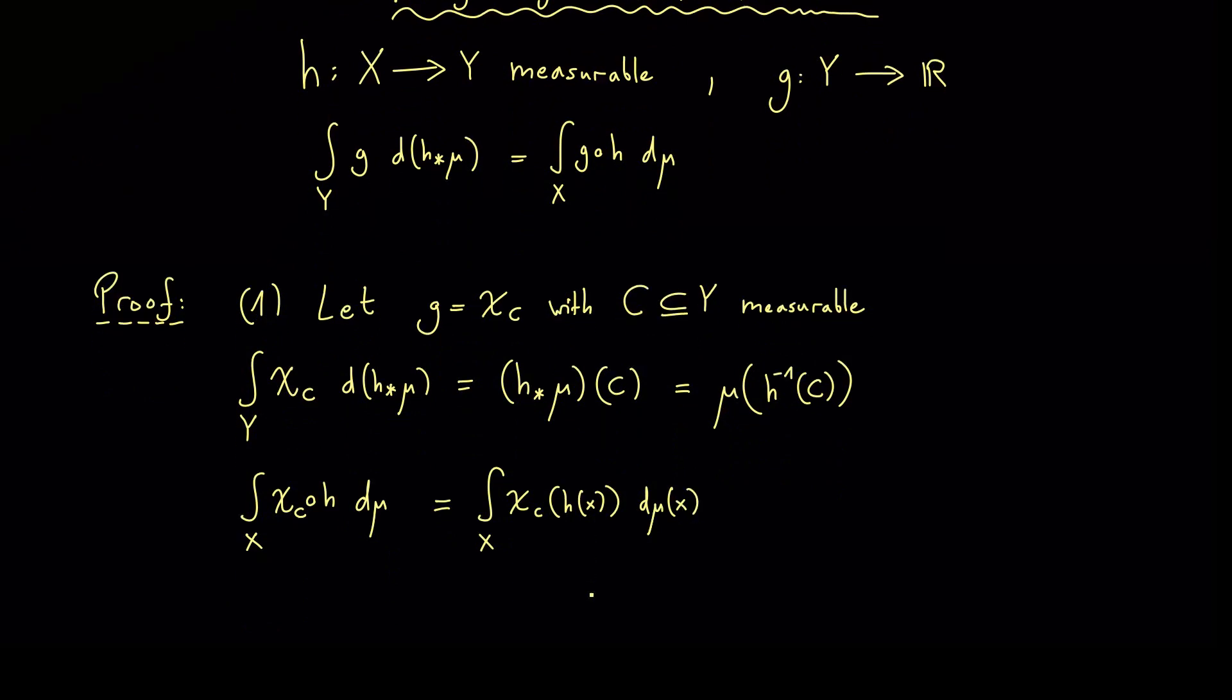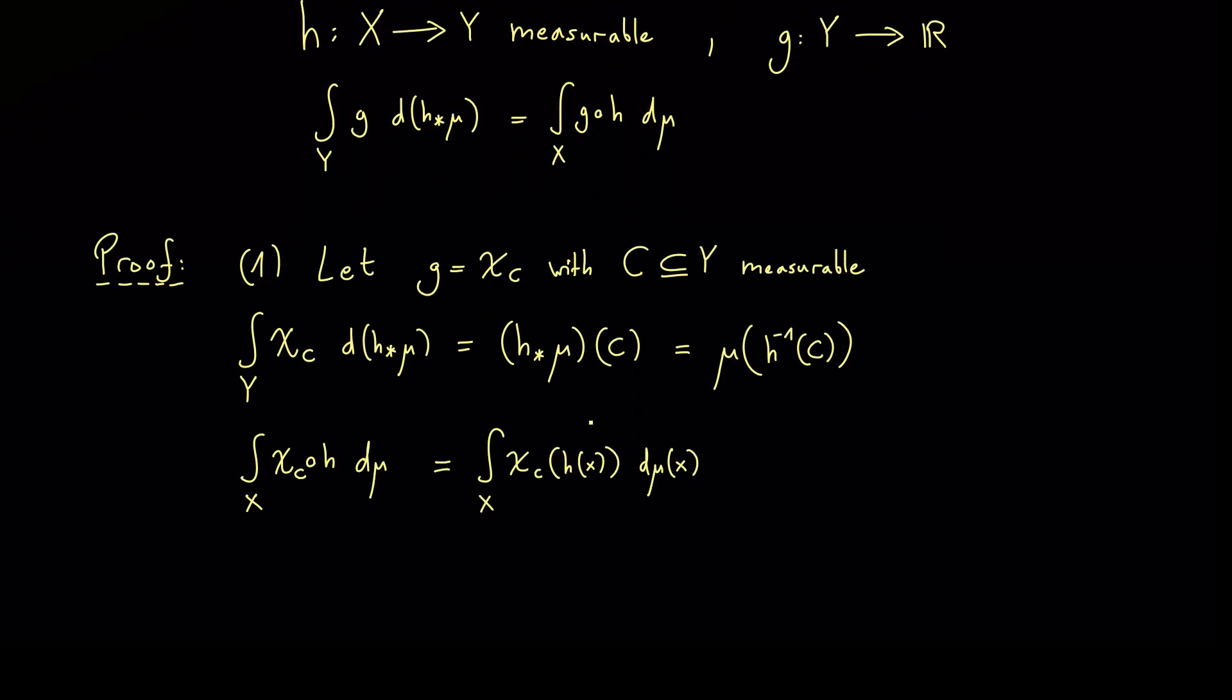At this point it's a good thing to note what this characteristic function really is. Of course we know that we only have the values 1 and 0. And we also know that this is only 1 in the case that HX lies in the set C. But of course we can rewrite this such that X lies in the pre-image of C. This is exactly the same and the same here for 0 is not in the pre-image of C.